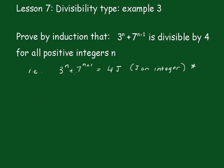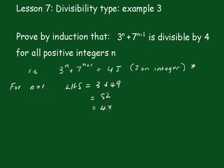That is, 3 to the n plus 7 to the n plus 1 is equal to 4j, where j is an integer. Now, for n equals 1, the left hand side equals 3 plus 7 squared, which is 49, which equals 52, which equals 4 times 13, which equals 4j — that is, j is equal to 13, an integer.